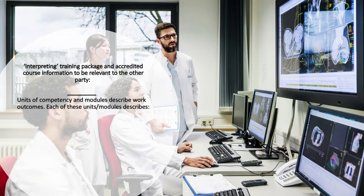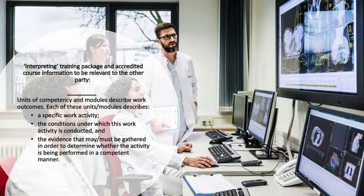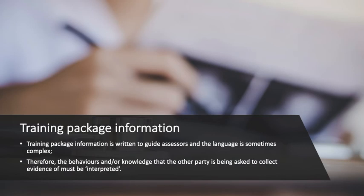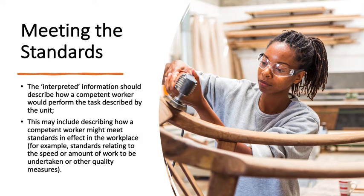Interpreting training package and accredited course information to be relevant to the other party: units of competency and modules describe work outcomes. Each unit or module describes a specific work activity, the conditions under which this work activity is conducted, and the evidence that may or must be gathered in order to determine whether the activity is being performed in a competent manner. Training package information is written to guide assessors and the language is sometimes complex. Therefore, the behaviours and/or knowledge that the other party is being asked to collect evidence of must be interpreted. The interpreted information should describe how a competent worker would perform the task described by the unit, which may include describing how a competent worker might meet standards in effect in the workplace — for example, standards relating to the speed or amount of work to be undertaken or other quality measures.